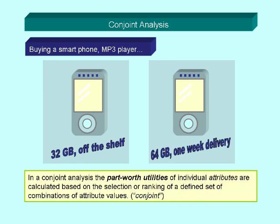So in a conjoint analysis, the part-worth utilities of individual attributes, in our case memory size and delivery time, are calculated based on the selection or ranking of a defined set of combinations of attribute values.